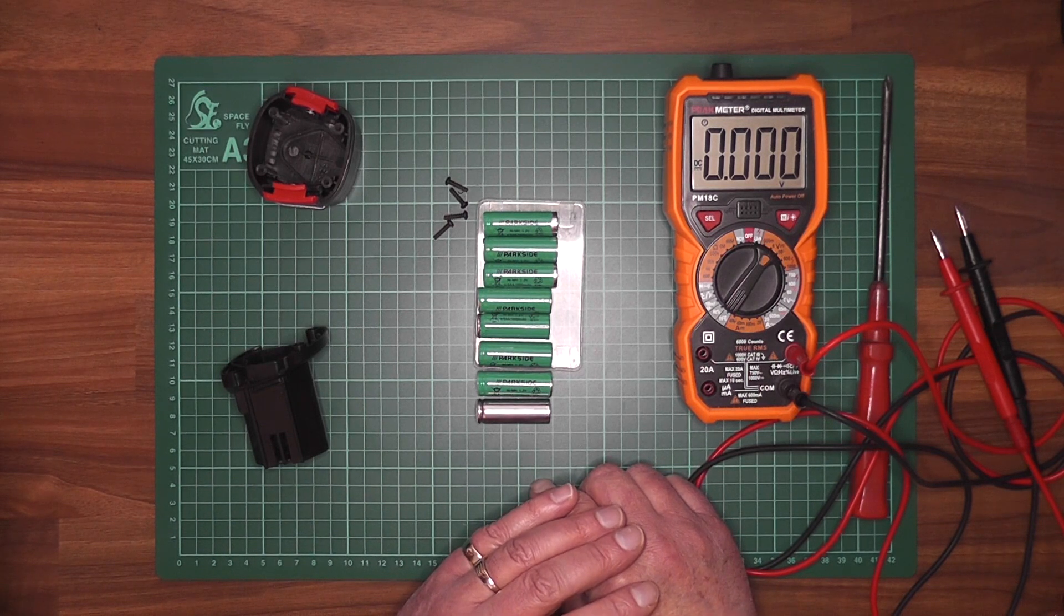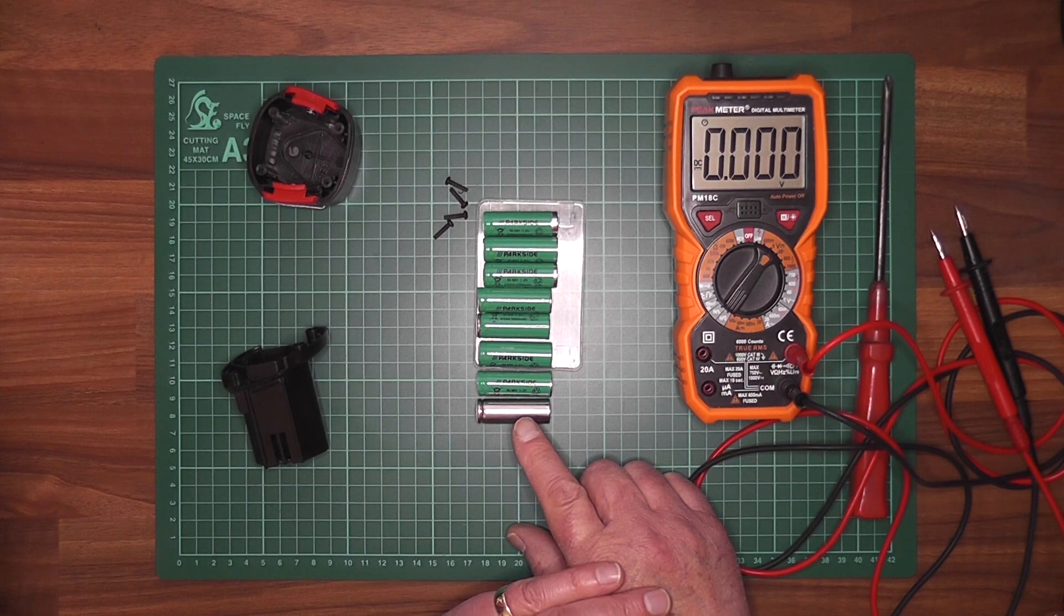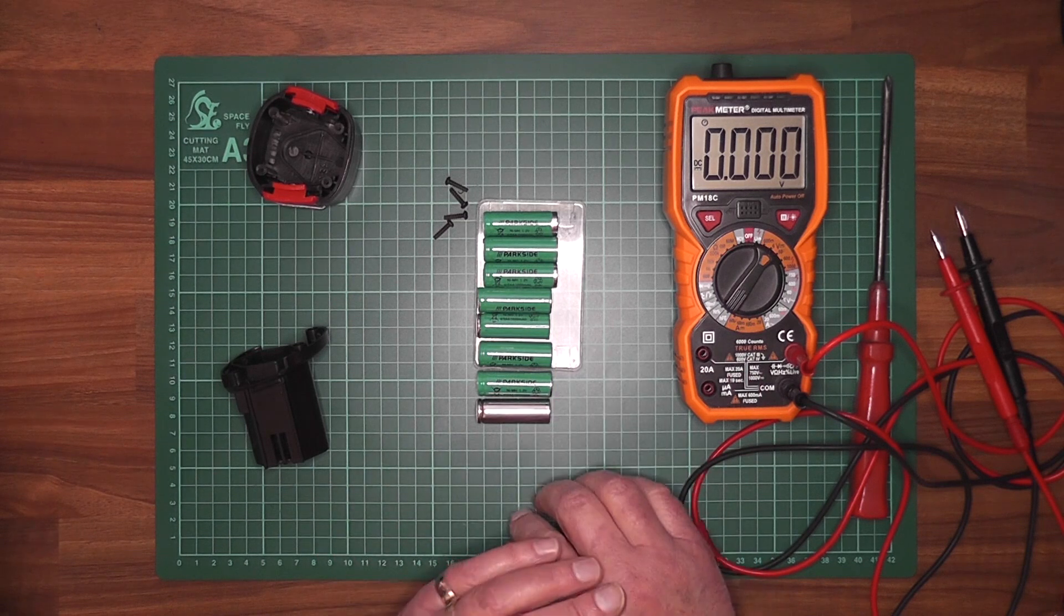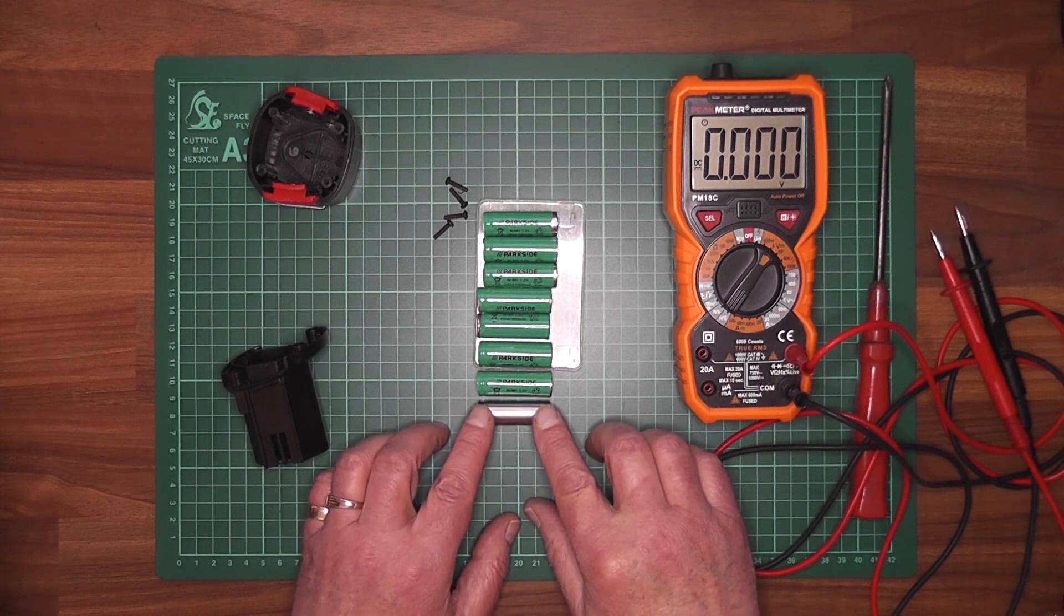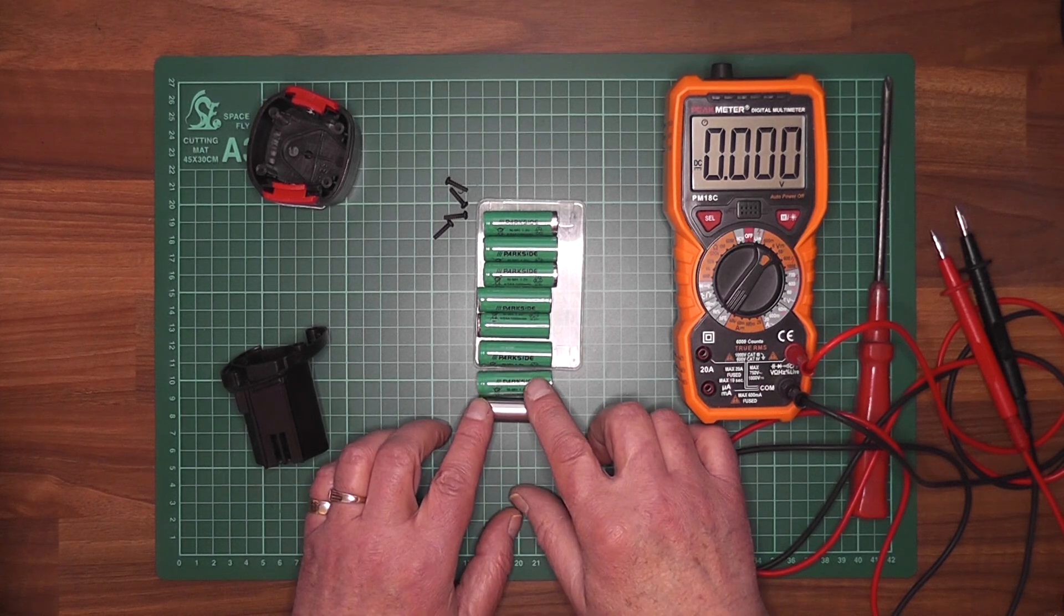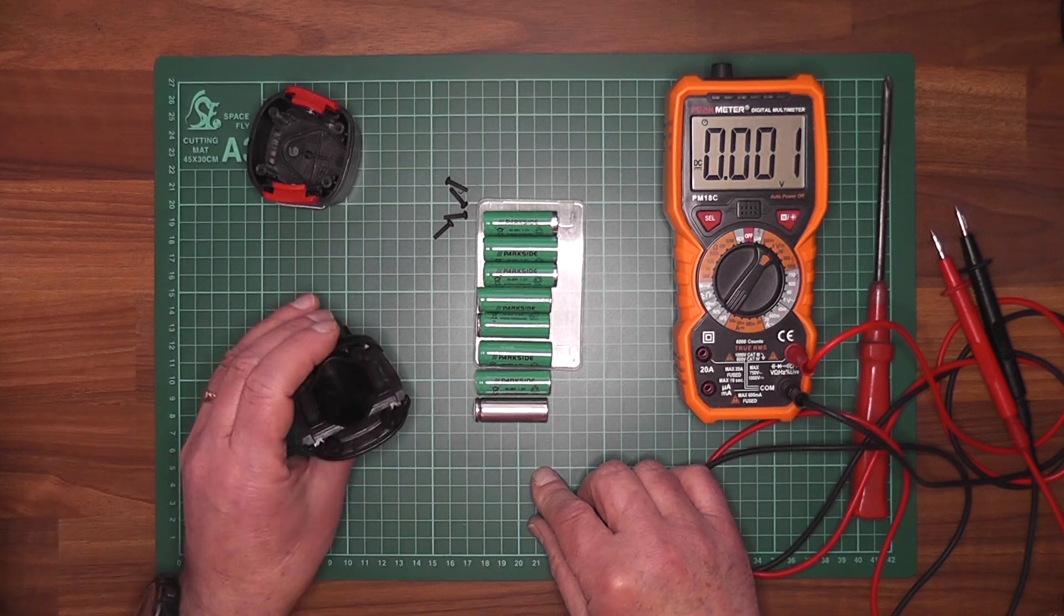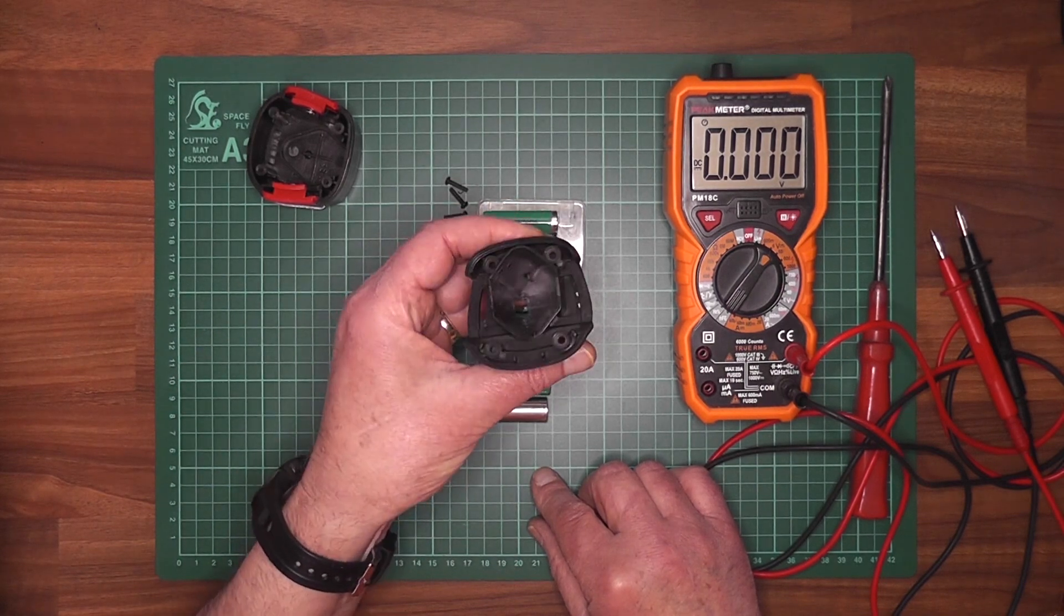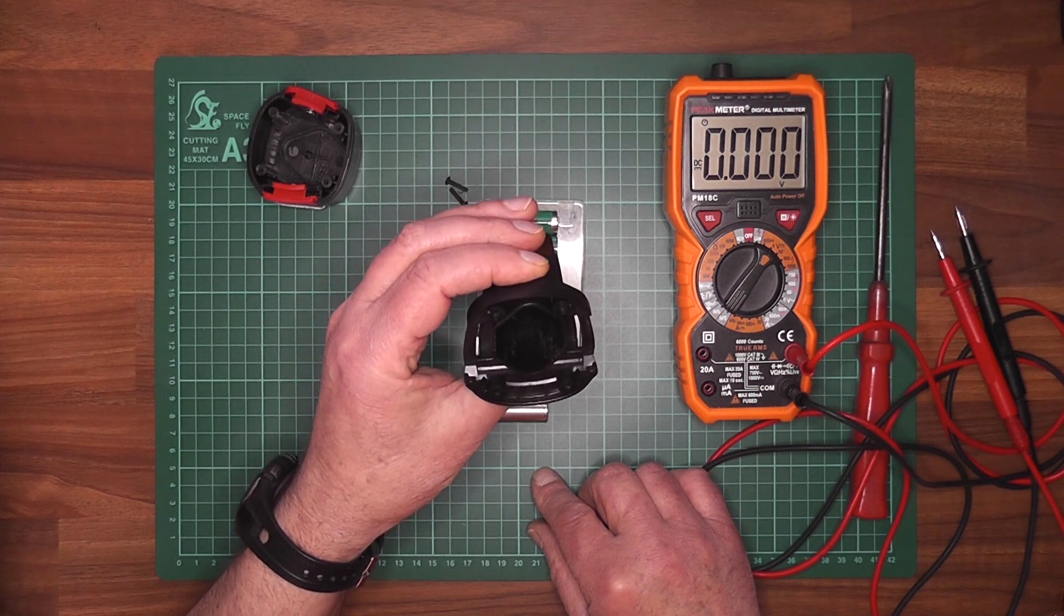Now finding these, these are not AAs and they're not AAAs, they're in between. Now there's probably a designation for them. It might even be, it says AA on them. It says four-fifths AA, which means they're not quite. And finding something to go into here is a bit of fun.